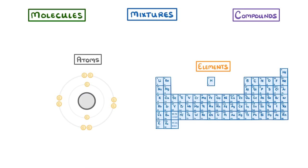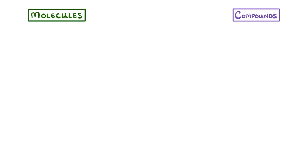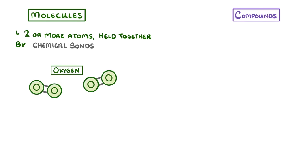Let's start by comparing molecules and compounds. A molecule is a group of two or more atoms that are held together by chemical bonds. For example, the oxygen floating in the air around us exists as pairs of atoms that are bonded together. So each of these would be classed as a molecule.